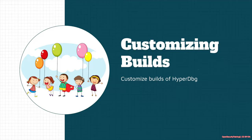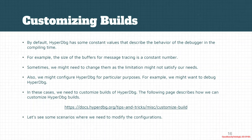Another trick I can talk about is how we can customize different builds of HyperDbg. HyperDbg has some constant values that, based on regular needs, should be set to specific values. For example, the size of buffers for message tracing is a constant number, so you could increase or decrease this value based on your needs.